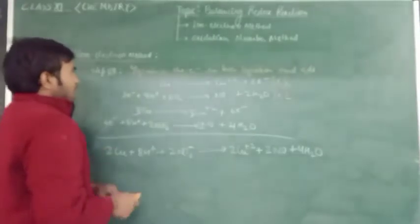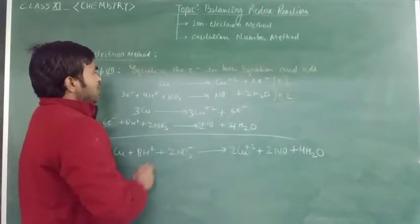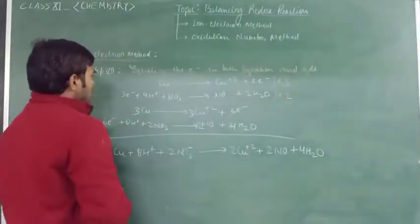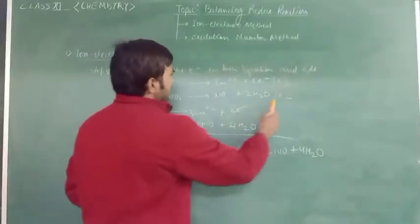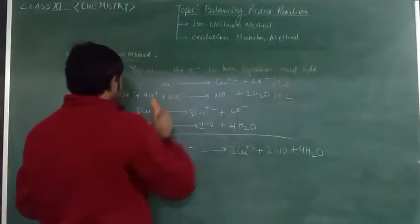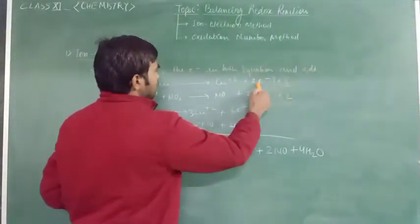So, for equalizing the electrons in both of the equations, the oxidation half-reaction is multiplied by 3 and the reduction half-reaction is multiplied by 2. So, the whole oxidation equation multiplied by 3, then it will be 3Cu plus 3Cu²⁺ plus 6 electrons.